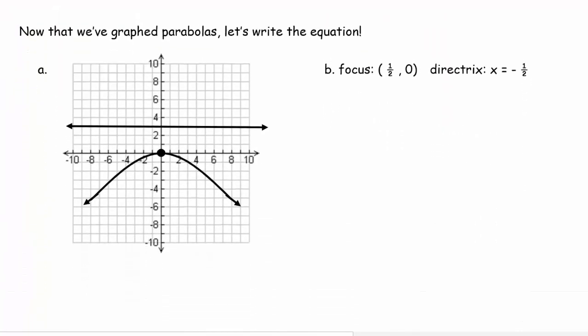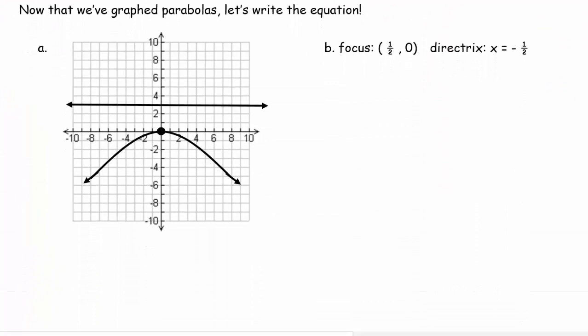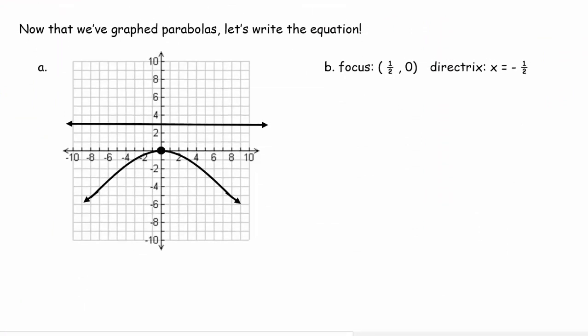Okay, so now we're going to go backwards. Because this says, now that we've graphed parabolas, let's write the equation. So let's remember that the general equation is (x - h)² = 4p(y - k). That's our general formula where we want to plug in numbers in for h, p, and k.